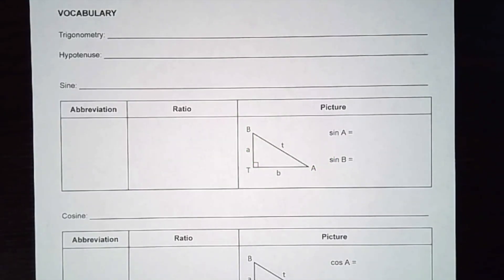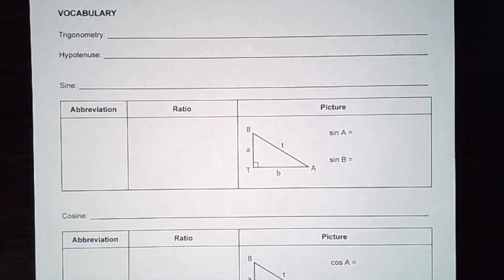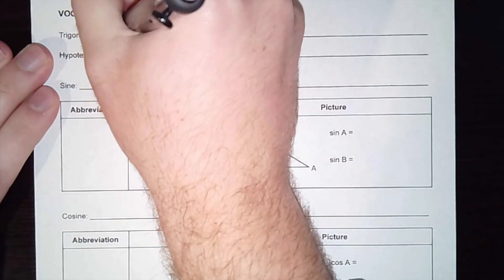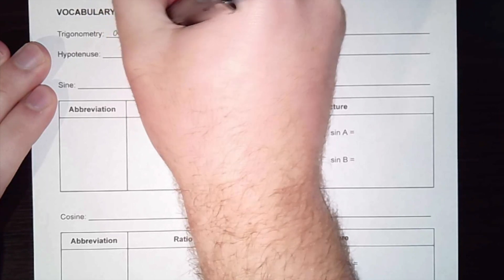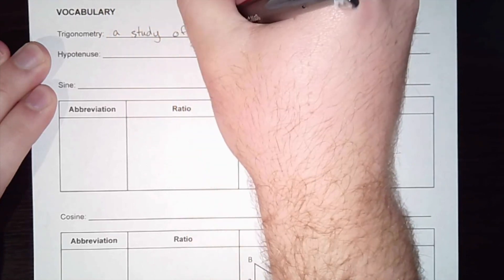Hello everyone, today we are talking about lesson 10-1 which is dealing with trigonometry ratios. Hopefully you remember trigonometry a little bit from last year. Trigonometry is basically when we start to talk about triangles and we're trying to find missing sides and missing angles. In general, we're going to say that trigonometry is simply the study of triangles.